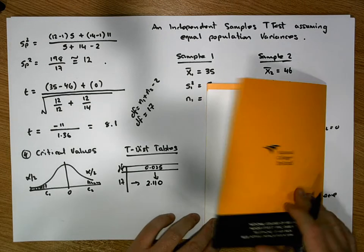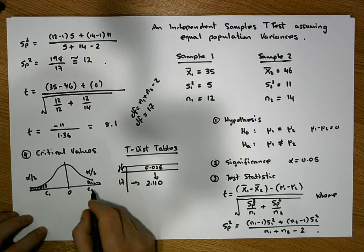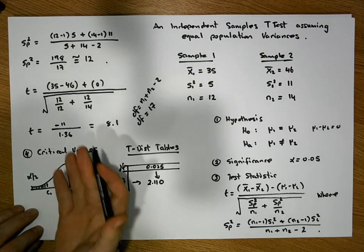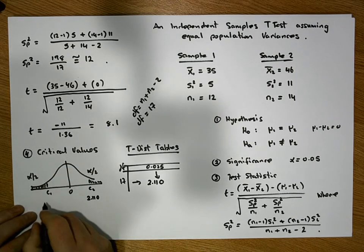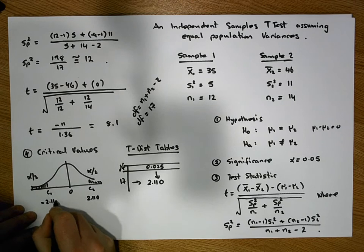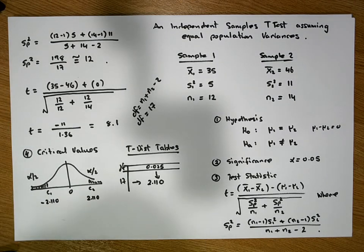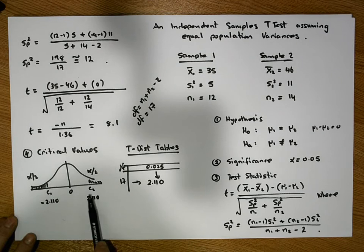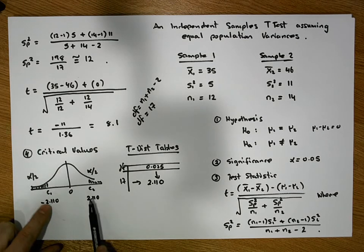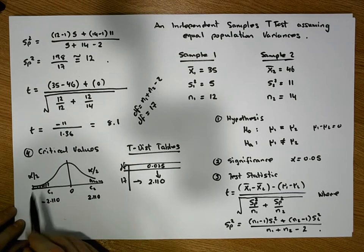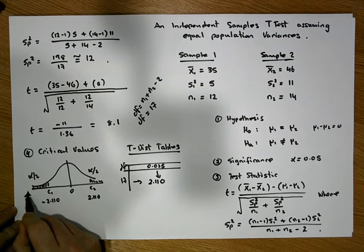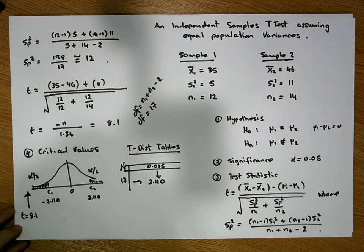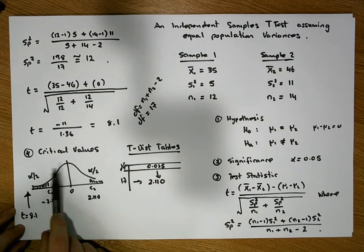So what we know is that this critical value here is 2.110. And through symmetry, this critical value here is minus 2.110. The question that we have is, is the test statistic bigger than these two, either of these particular two demarcation points. Now clearly we can see that our test statistic is in this area over here. t is equal to 8.1. So the test statistic falls into the rejection region.